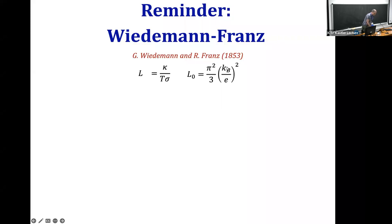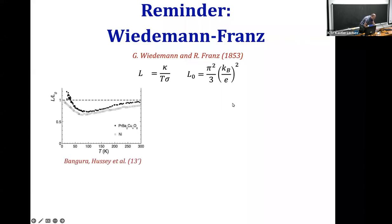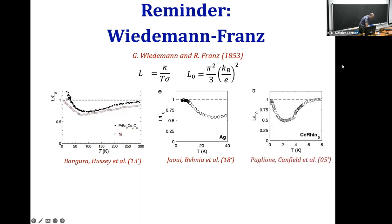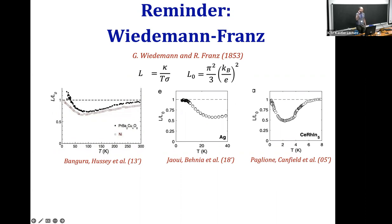Here are some examples. The open squares are nickel, a quasi-one-dimensional metal — the Lorentz ratio divided by L₀ as a function of temperature shows a nice approach to one. This is silver, which again approaches one at the lowest temperatures. And here's a heavy fermion compound showing the very typical behavior: it starts from one at the lowest temperatures, deviates down, and then recovers back to one at higher temperatures. What's striking is that across these different materials, the ratio approaches one within a few percent — it's a quantitative prediction.